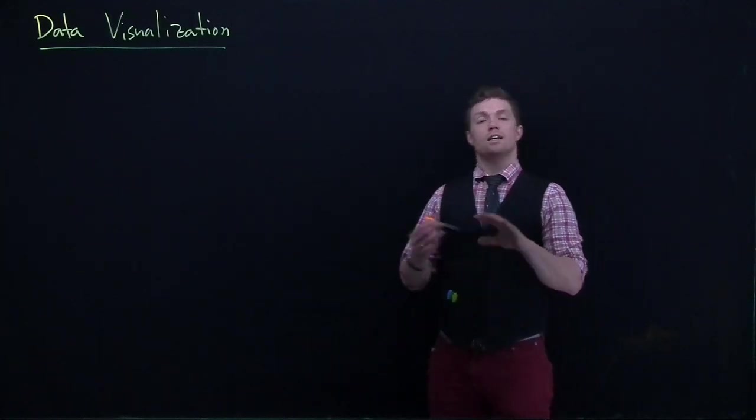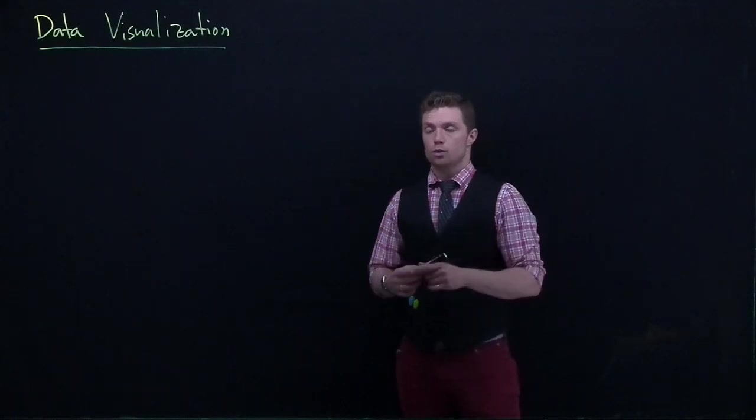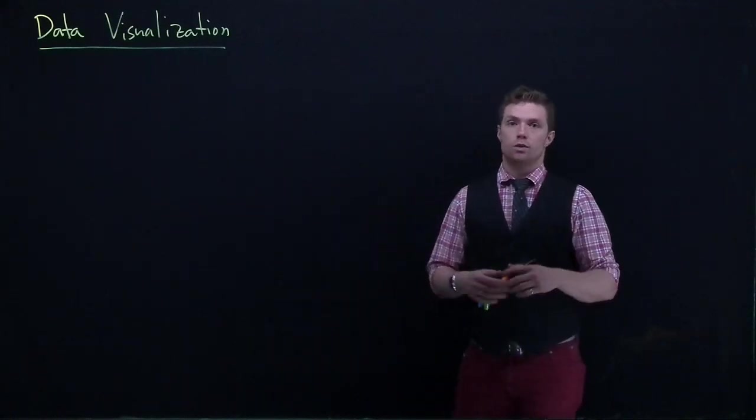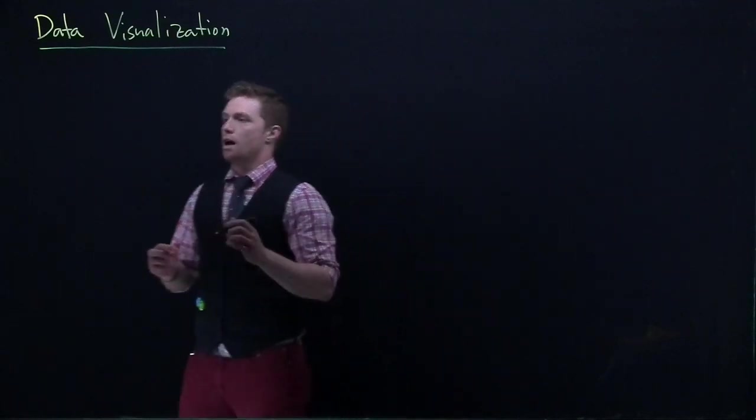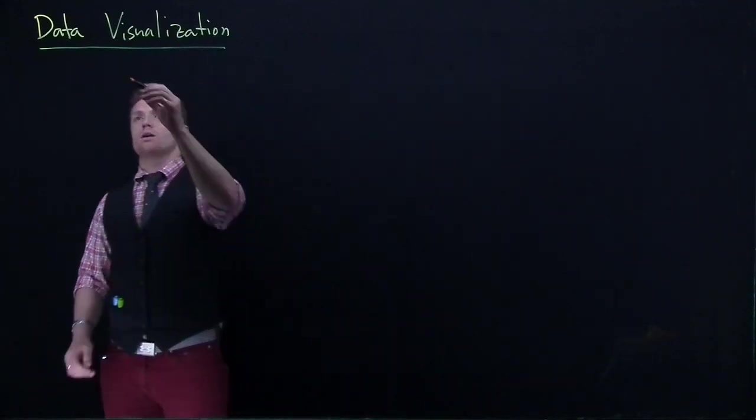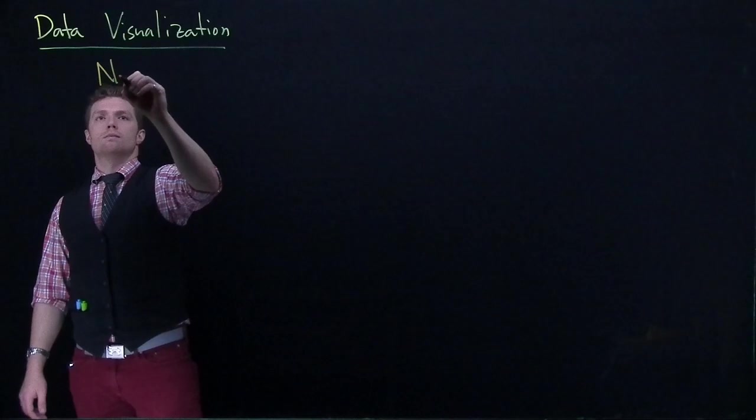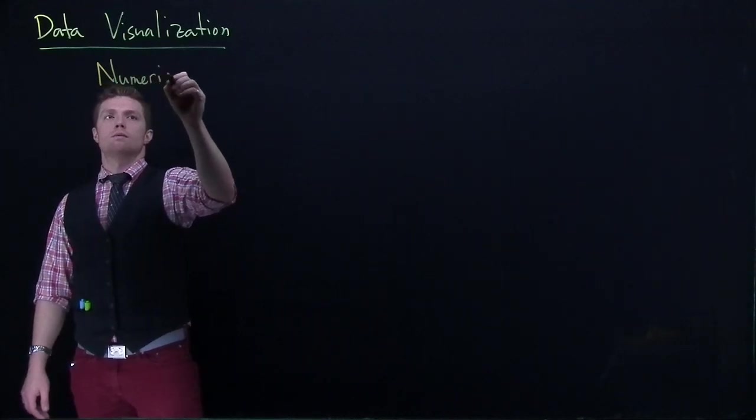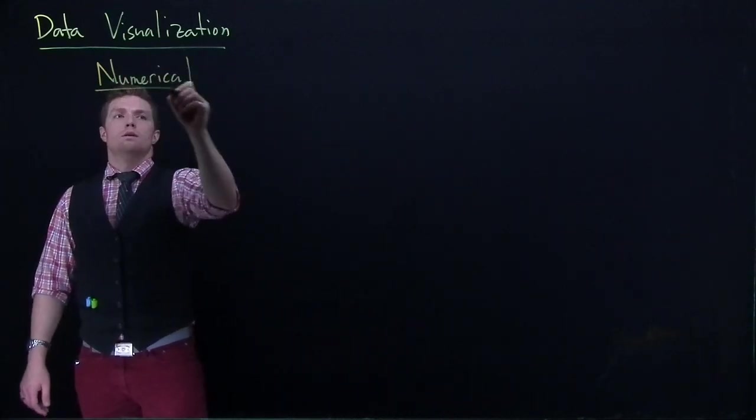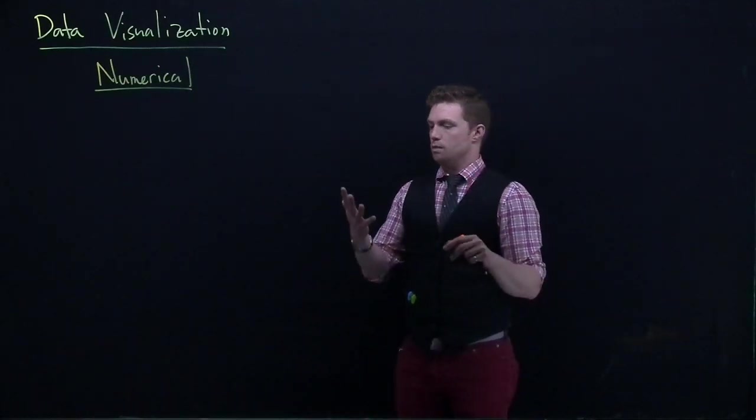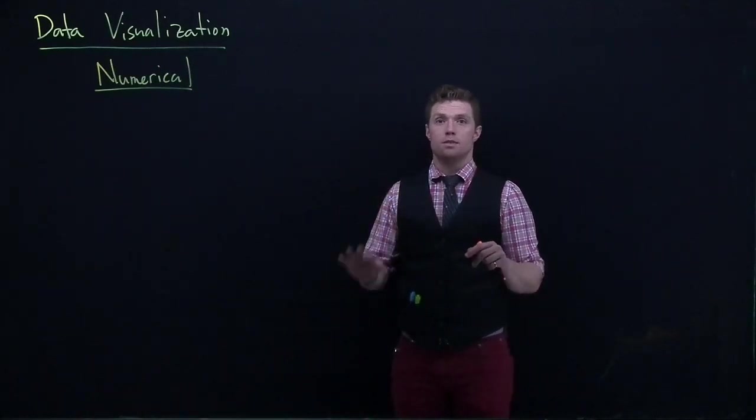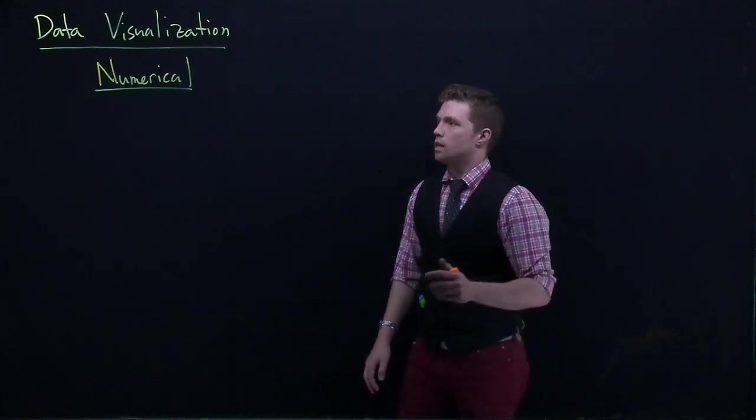Alright, so we're going to break our data visualization up into two groups. We're going to talk about our numerical data visualization and our categorical. So first, let us start off with our numerical. And for this section, we're really going to focus on kind of like four main types of ways that we can visualize our numerical data.